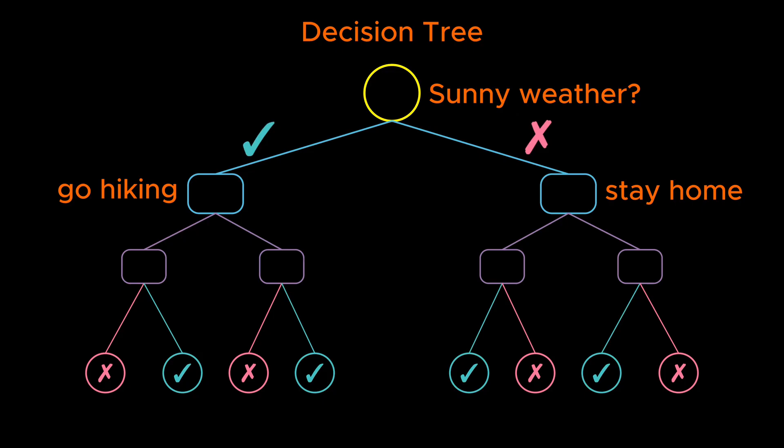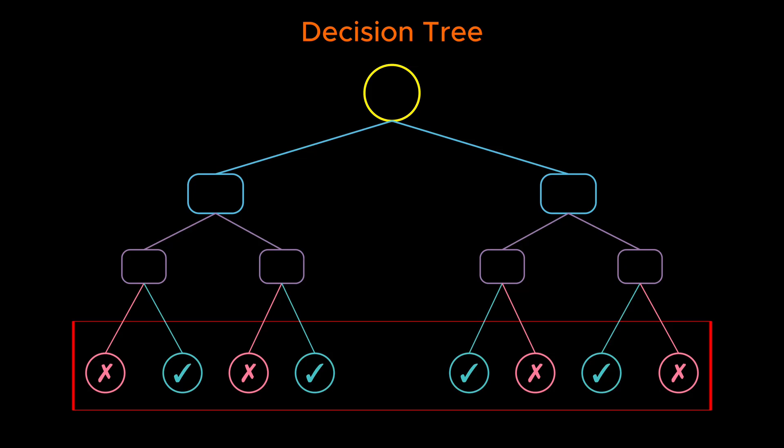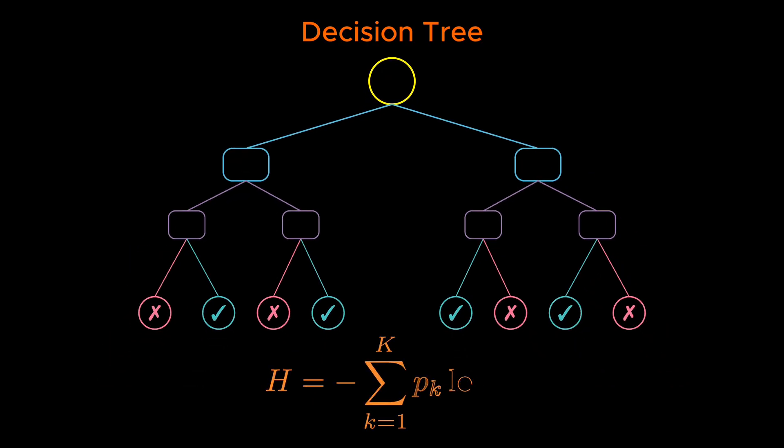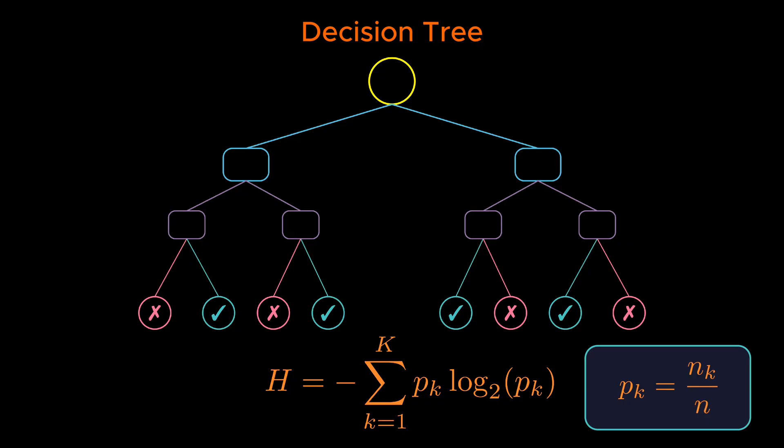At the top, we have the root node, which contains all data points and therefore has the highest entropy. At the bottom, we have the leaf nodes, which are ideally pure. Each leaf contains samples of only one class. We quantify the disorder in each node using entropy, just as in physics, given by the following formula. Here, K is the total number of possible classes. In the perfume example, K is 4. The term P sub K is the probability of class K in that node, estimated simply as the fraction of samples in that node that belong to class K.